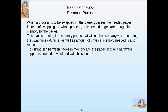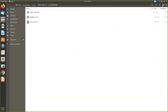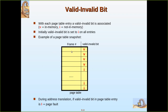To distinguish between pages in memory and pages on disk, hardware support is needed — specifically the valid/invalid bit scheme. In the page table, there is an extra bit called the valid-invalid bit. If it is V, it indicates the page is present in memory. If it is I, it means the page is not in memory. This bit is said to be the valid-invalid bit.